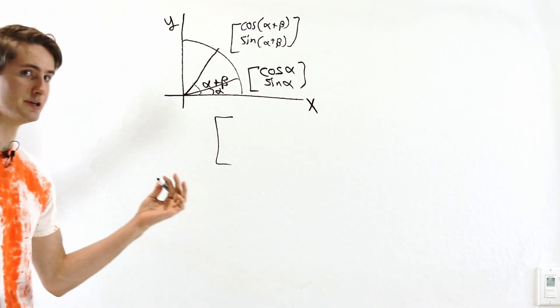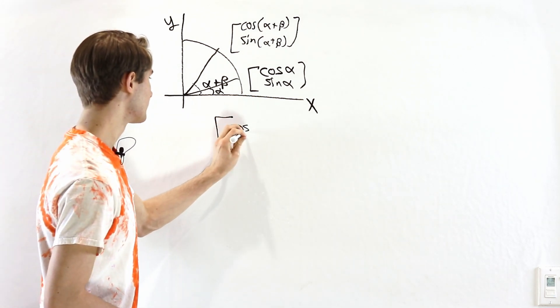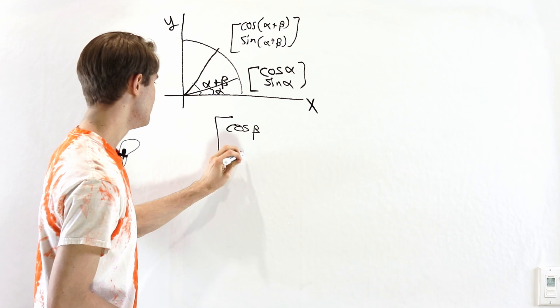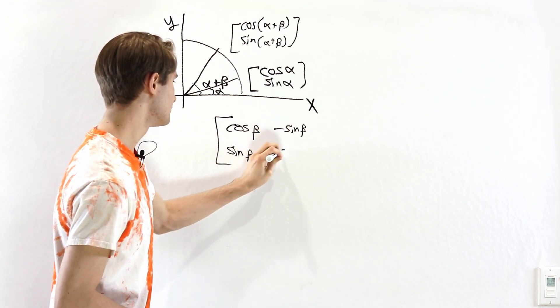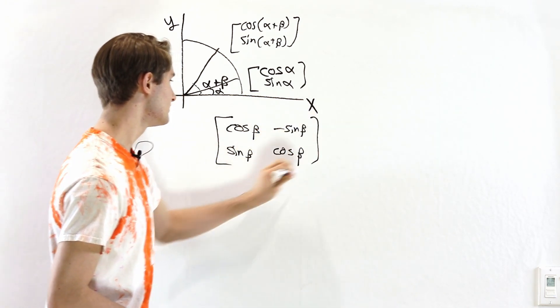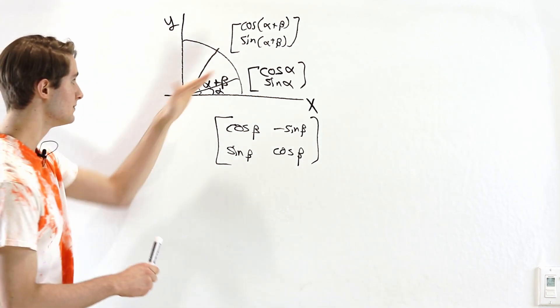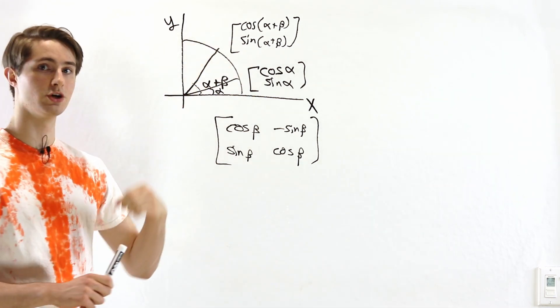That's going to look like cosine beta, sine beta, negative sine beta, cosine beta. So this is the rotation matrix that describes rotating by an angle of beta.